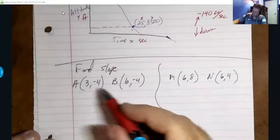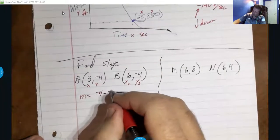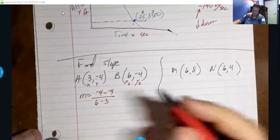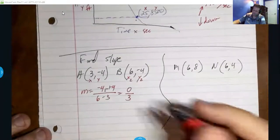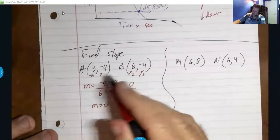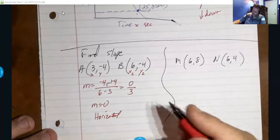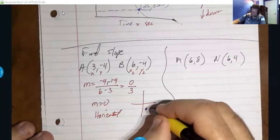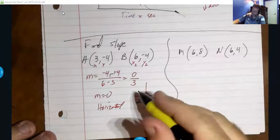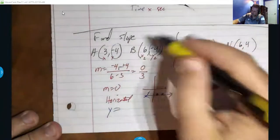A bit more practice: x1 y1, x2 y2 — we find the slope. Negative 4 minus negative 4 over 6 minus 3: two negatives make a positive, so negative 4 plus 4 is 0, all over 3 — a slope of zero. This means the line is horizontal. If you graph it, you'd have a point at (3, negative 4) and (6, negative 4) — it's horizontal. The equation would be y equals negative 4.